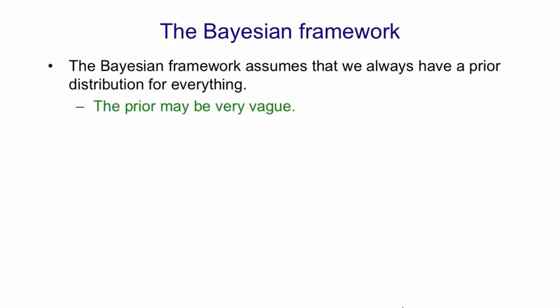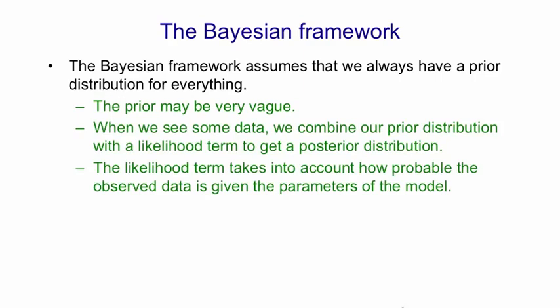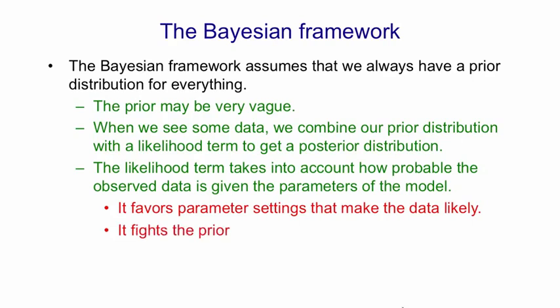The prior might be very vague. So what's happening is our data gives us a likelihood term, we combine it with our prior, and then we get a posterior. The likelihood term favors settings of our parameters that make the data more likely. It can disagree with the prior, and in the limit, if we get enough data, however unlikely the prior is, the data can overwhelm it, and in the end, with enough data, the truth will out. That is, even if your prior is wrong, you'll end up with the right hypothesis. But that might take an awful lot of data if you thought things were very unlikely under your prior.